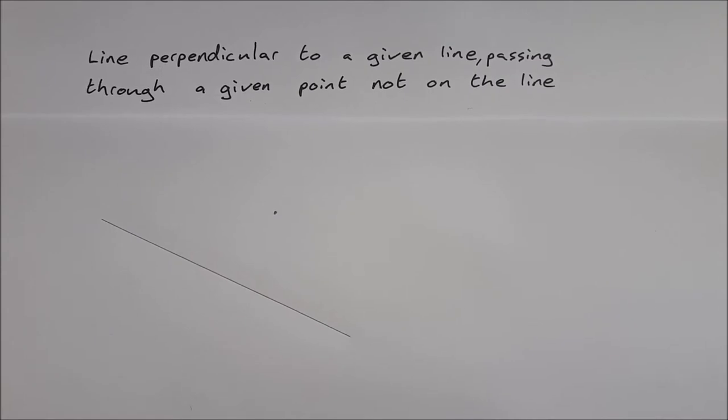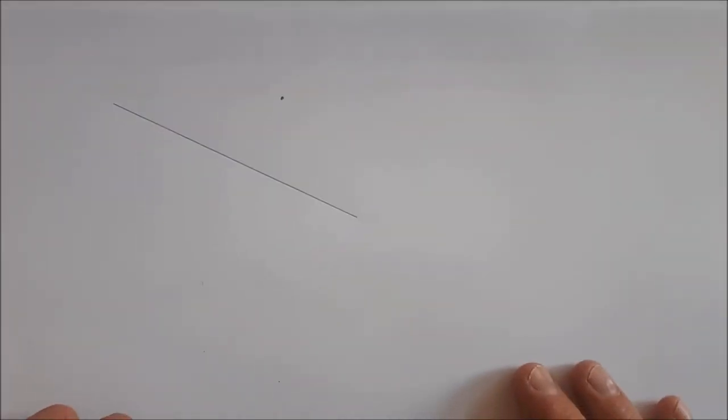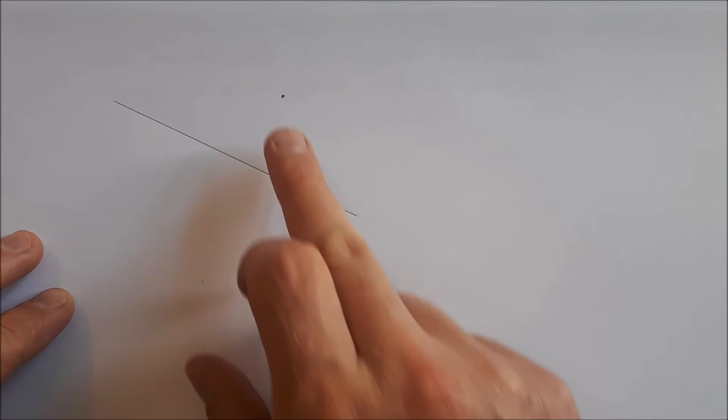In this video I'm going to do construction 3, which is to draw a line perpendicular to a given line passing through a given point that's not on the line. So here is my line and here is the point that I'm given.